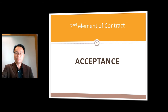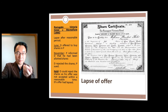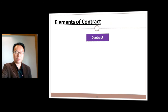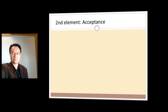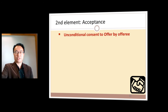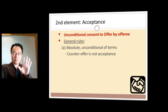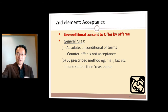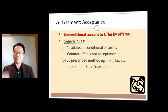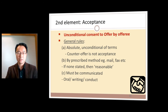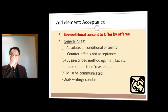That's just the first element. Let's look at the second element: acceptance. For a proper valid offer to be accepted, you must accept it unconditionally — you must say 'yes, I absolutely accept.' Don't make any counter offers, as they will kill the original offer. You can reply by any means — mail, fax, or a reasonable means if none is stated — and you can accept orally, in writing, or even by conduct such as shaking hands. An oral offer plus oral acceptance results in an oral contract.